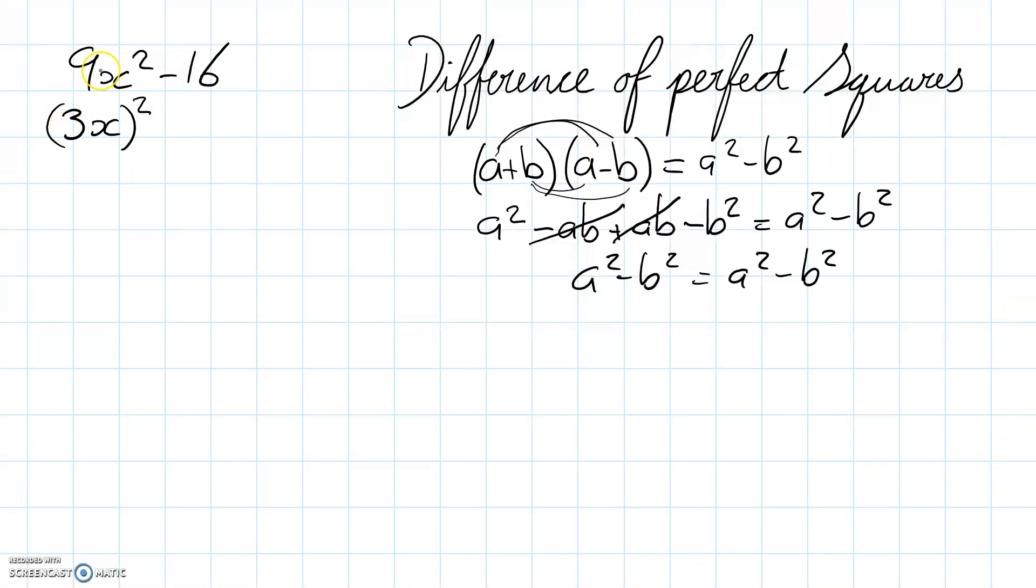Because 3 times 3 will give us 9, and negative 16 we can do the same, we can write it as minus 4², and now we have something that looks the same as this difference of perfect squares product I introduced earlier.